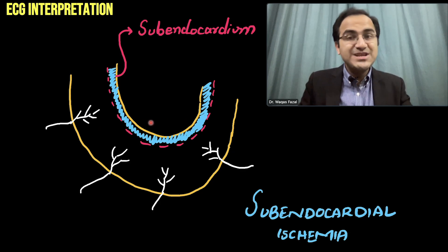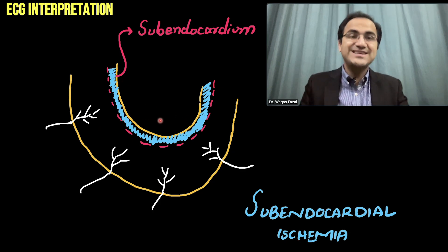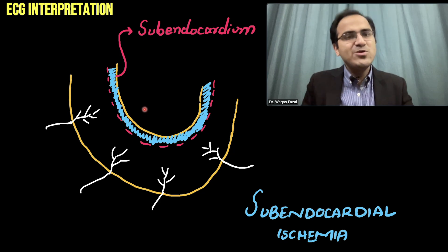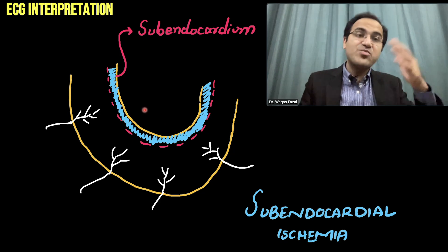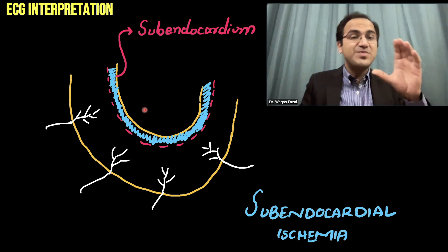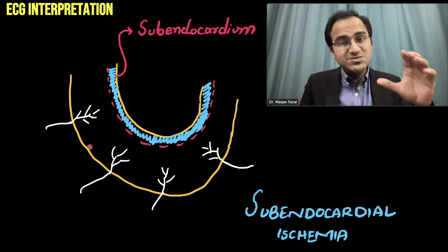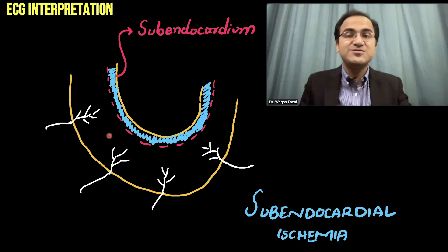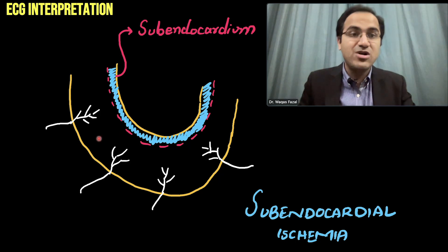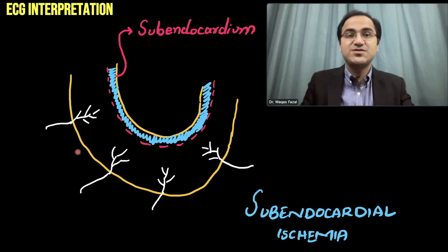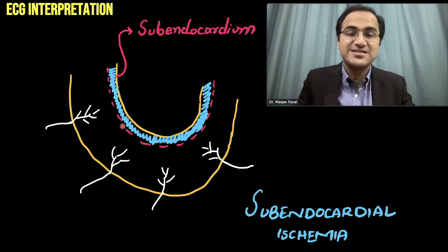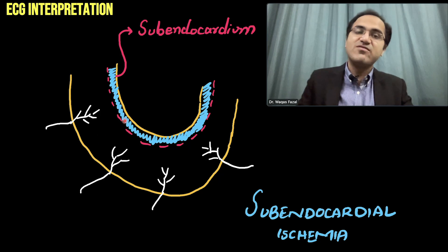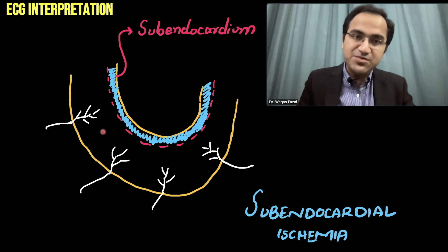So, initially there will be subendocardial ischemia, and subendocardial ischemia later on progresses to become transmural ischemia, in which the whole wall of the heart — the entire thickness — is affected.